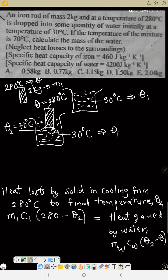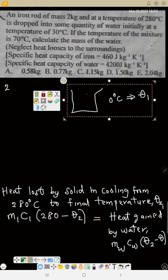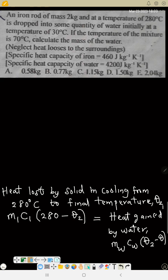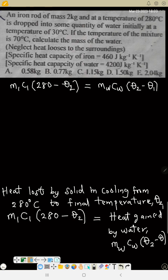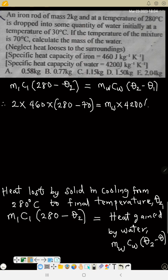Combining all the formulas: heat lost by the iron rod equals m1 times c1 times (280 minus theta 2), and this equals the heat gained by the water: mass of water times specific heat capacity of water times (theta 2 minus theta 1). Substituting values: 2 times 460 times (280 minus 70) equals mass of water times 4200 times (70 minus 30).